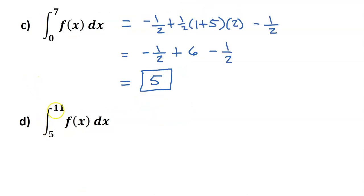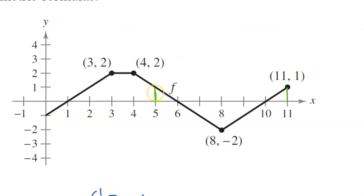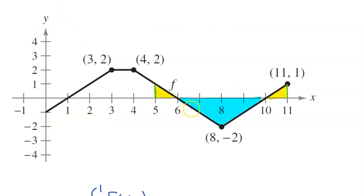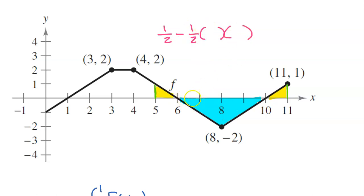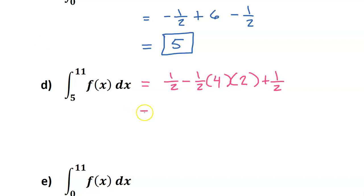For the net area from 5 to 11, I'll view this as three triangles: two with positive area and one with negative area. The first triangle is positive one half. The second triangle is negative, with area one half times base 4 times height 2, giving negative 4. The third triangle is positive one half. The two positive halves make 1, and 1 minus 4 gives a net area of negative 3.